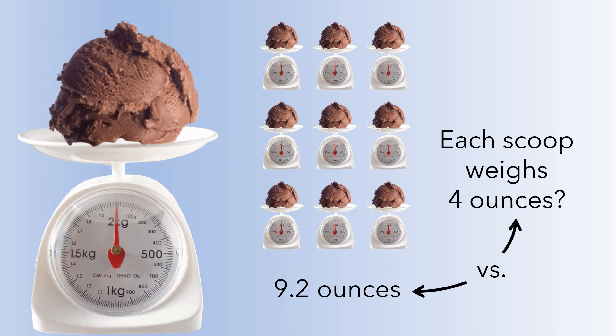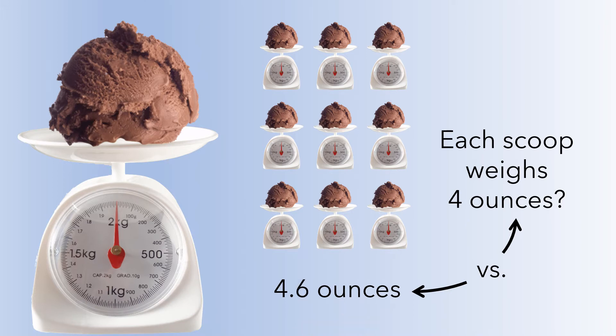Another way to think about it is that an average of 9.2 ounces is strong evidence against the claim. An average of four ounces is not evidence against the claim. And what about the 4.6 ounces?